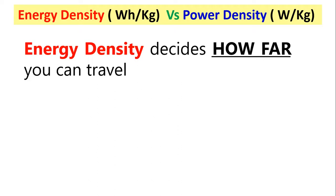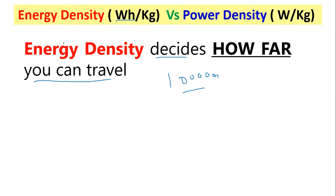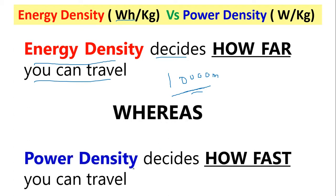Energy density is also compromised by power density. Energy density, measured in watt-hour per kilogram, decides how far you can travel. For example, like a runner — Usain Bolt, the fast runner — if you want to go for a long distance, you need energy density, you need a constant current over time. But if you want to go faster, like a hundred meter race, you need power density.